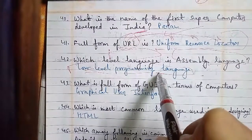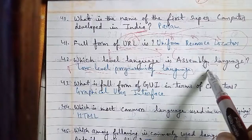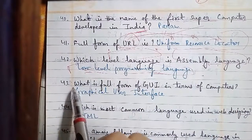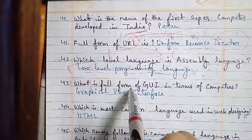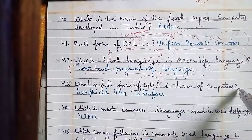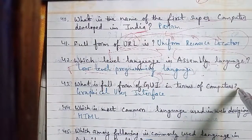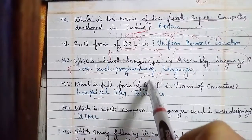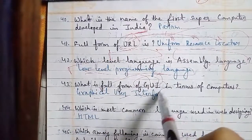Moving on to question number 43: what is the full form of GUI in terms of computers? The answer is Graphical User Interface — G stands for Graphical, U stands for User, and I stands for Interface. So GUI stands for Graphical User Interface.